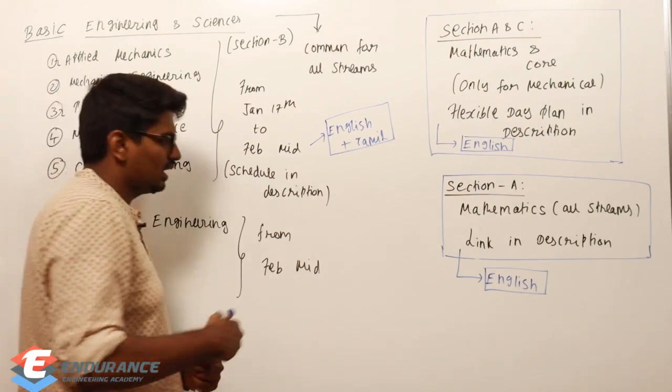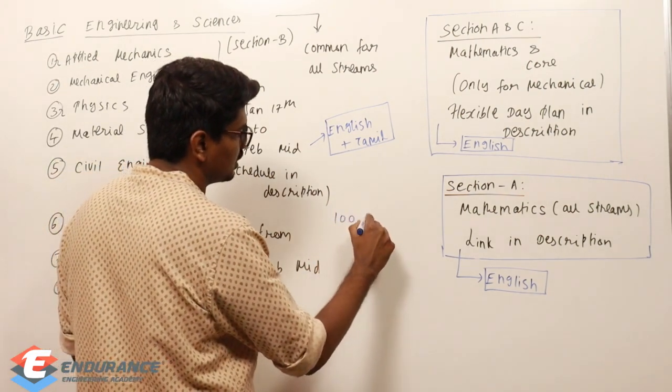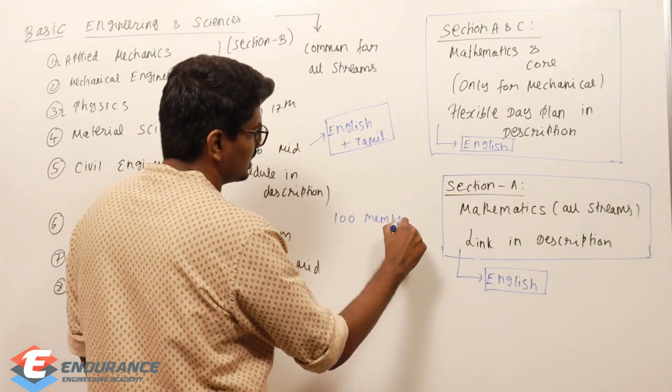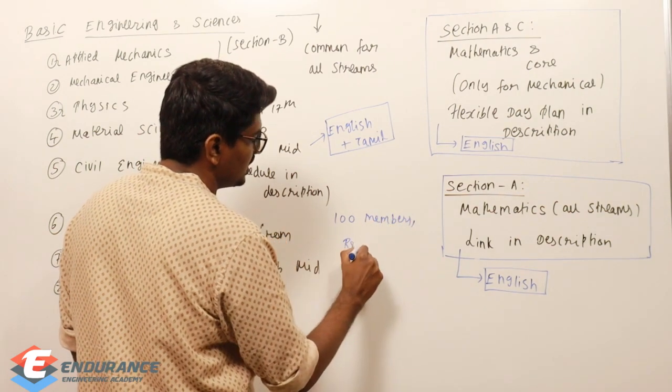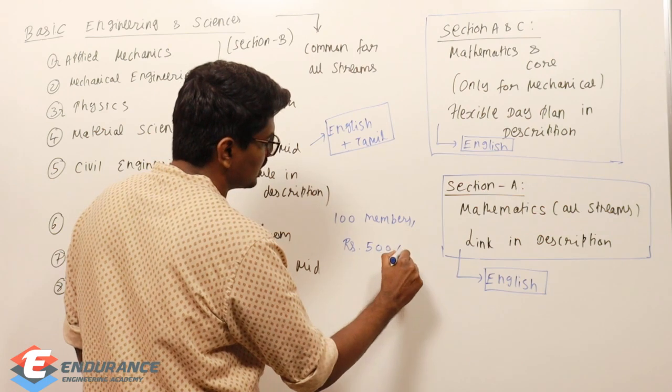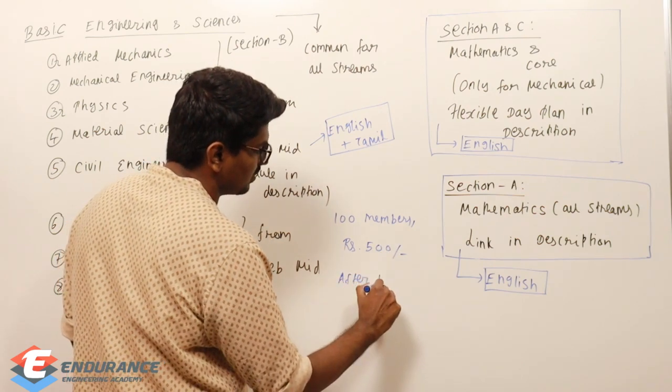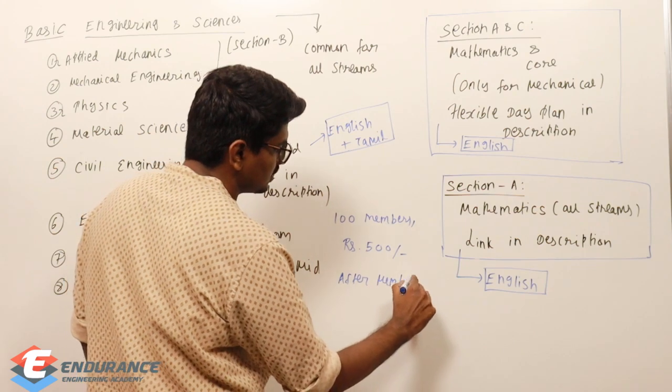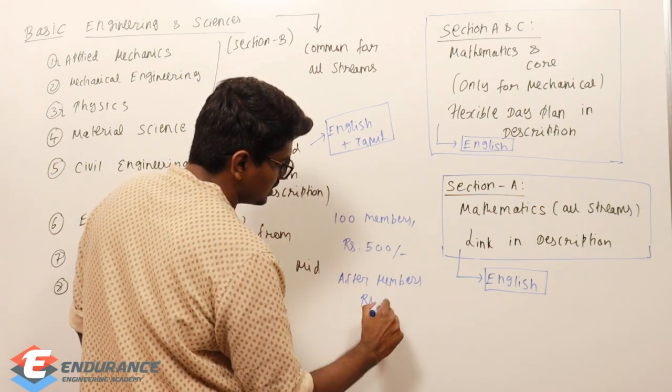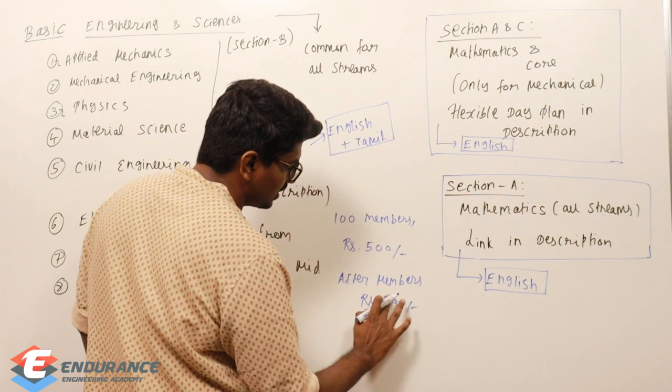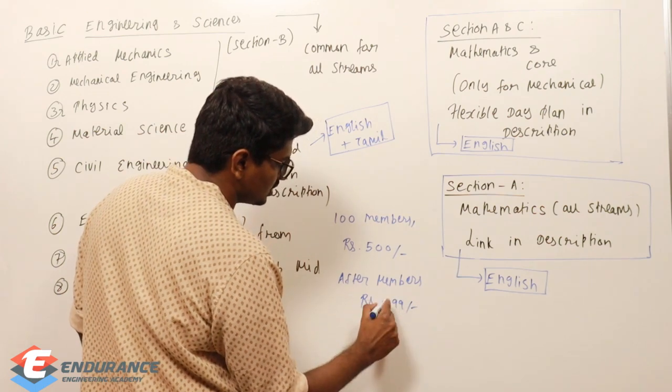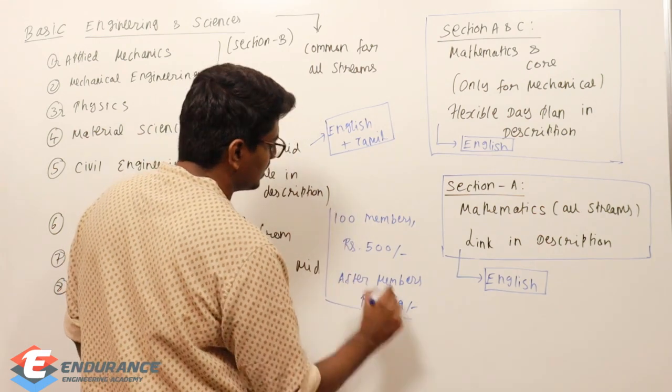Course fee already described. First 100 members, Rupees 500. And after 100 members register, Rupees 999. That is the present plan.